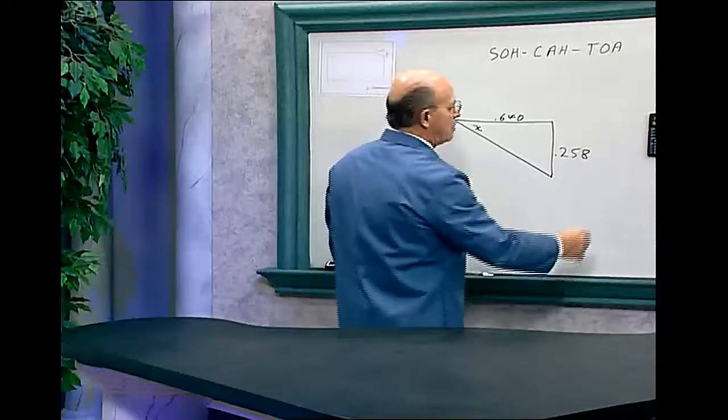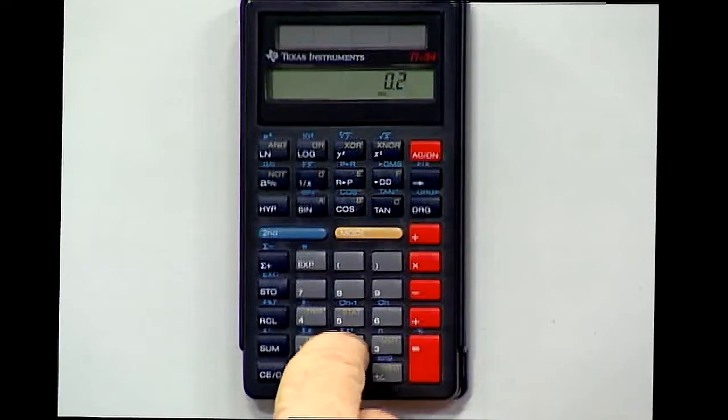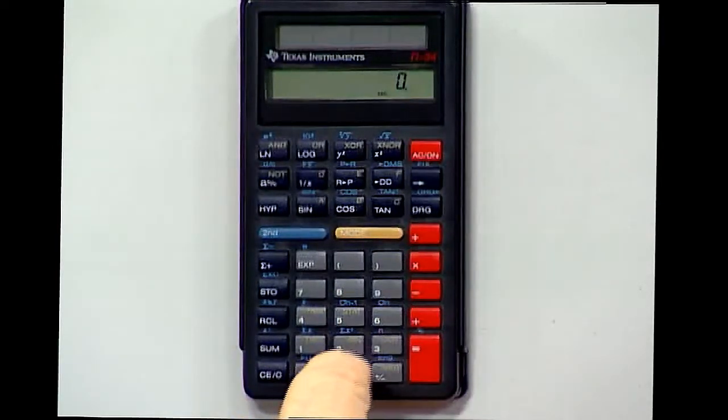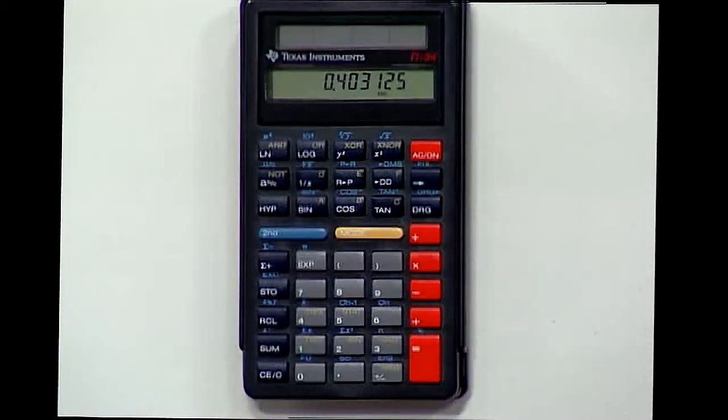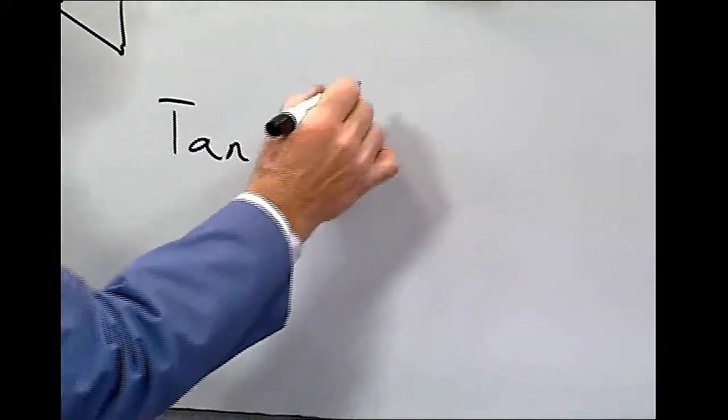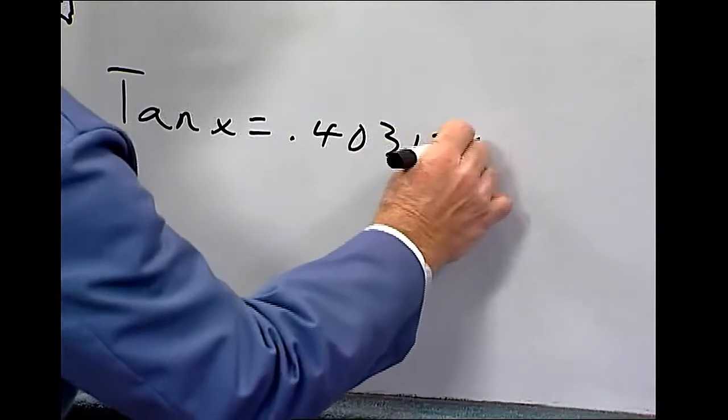Let's go to a calculator. Let's clear it. So it's 0.258 divided by 0.64 equals, so tangent X equals 0.4031 25.